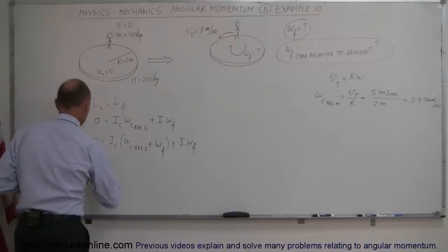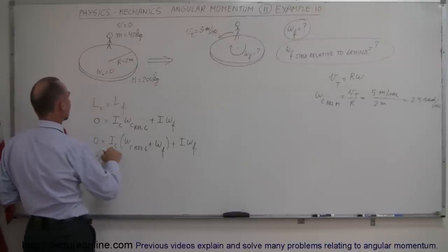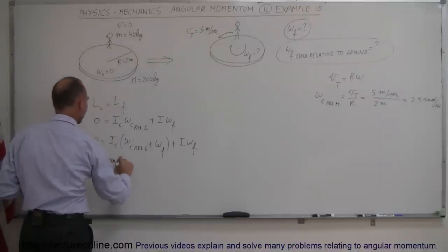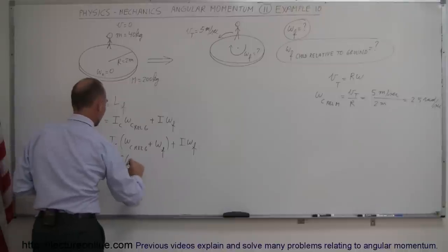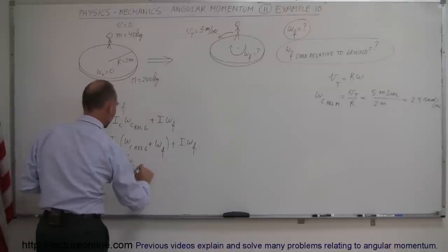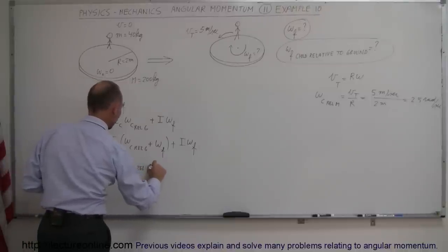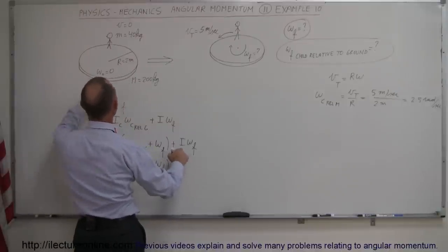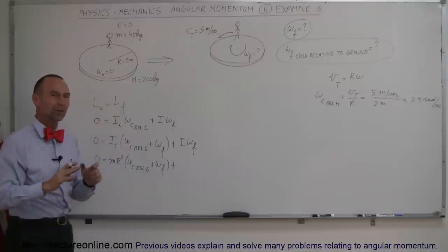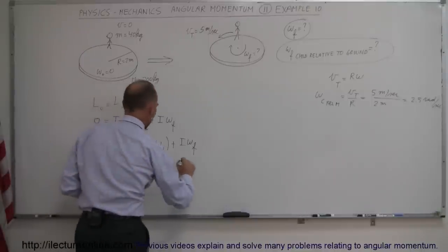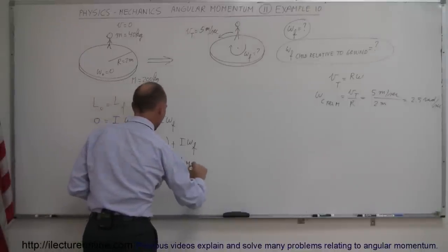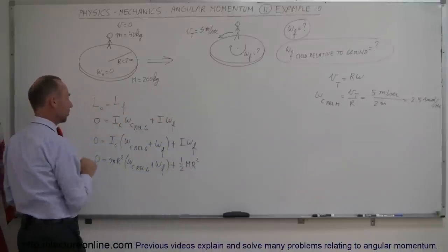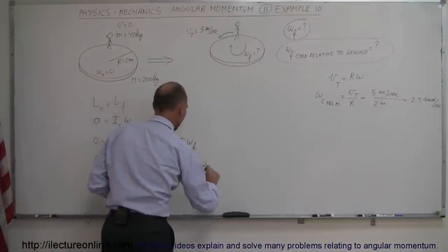Let's plug in all the knowns. The moment of inertia of the child walking along the edge equals its mass times r squared. The moment of inertia of the merry-go-round, which can be considered a flat disk, is one-half the mass times r squared. I use capital M for the mass of the disk and small m for the mass of the child, times omega final.